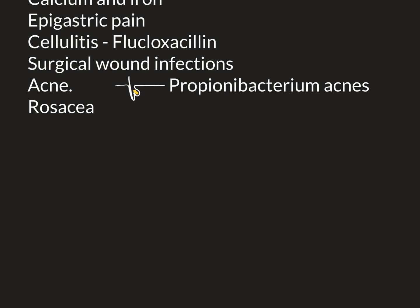Another extremely common skin condition that tetracyclines can be used to treat is rosacea. Rosacea is basically the name for having a red face. It is very common, especially amongst Caucasian people — even just going to the supermarket you will see several individuals who suffer from it. It's so common that many people aren't even aware it has a medical name, and many people just think of their red face as being part of them.